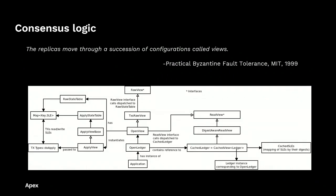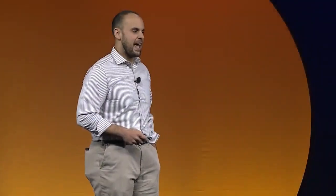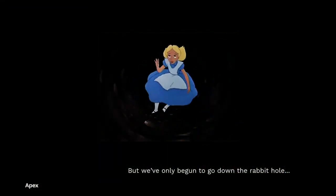To quote from one of the pivotal white papers on Byzantine fault tolerance: the replicas move through a succession of configurations called views. Views facilitate controlled access to the ledger such that data may be read and written in a controlled manner and rolled back if necessary. The application has a handle to open ledger, open ledger has a handle to open view which derives from read view, and also has a handle to apply view, through which the transactions are applied. But we've only just begun to go down the rabbit hole.